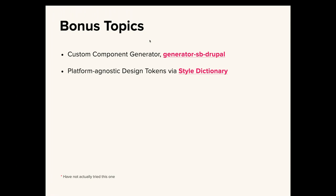Platform-agnostic design tokens: has anyone used Style Dictionary? It's fantastic. You basically create one set of design tokens regardless of your platform, and then you tell it how you want it to output. We're outputting CSS custom properties, Sass variables, and a JSON version that we consume in React. There are all these other output formats you can do. It's really great if you are using different systems and frameworks.